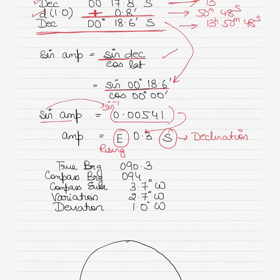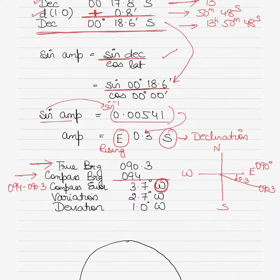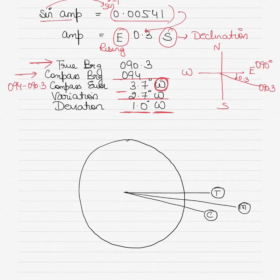E 0.3 S means 0.3 degrees south of east, so measuring from 090 degrees going southward gives a true bearing of 090.3 degrees. The compass bearing given in the question is 094 degrees, so compass error = 094 minus 090.3 = 3.7 degrees. Since the compass is greater than true, 'compass best, error west' — compass error is 3.7 degrees west. With variation 2.7 degrees west, deviation = 3.7 minus 2.7 = 1 degree west.